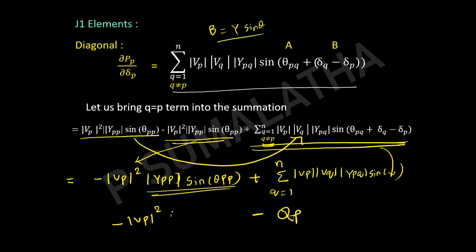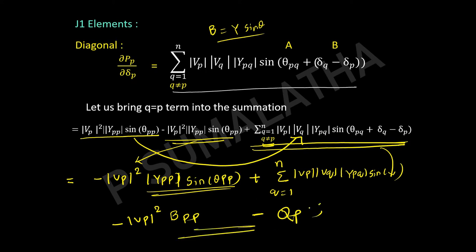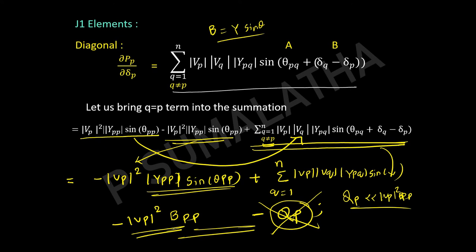Since B′ and B″ are constant matrices, they do not change with each iteration. If you find them for the first iteration, the same values can be used for subsequent iterations — this is why the computation time drastically reduces for the Fast Decoupled Load Flow technique, making it faster than the NR method.